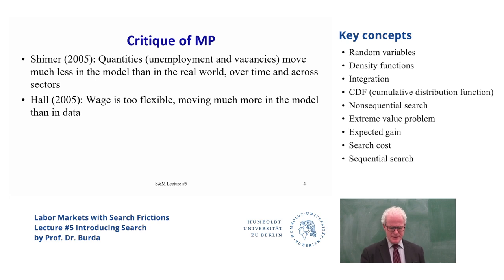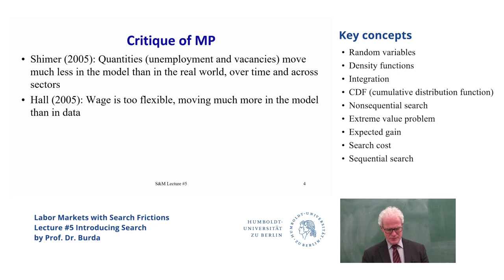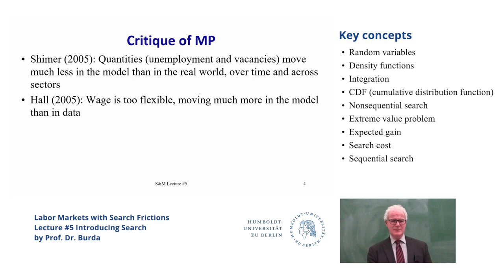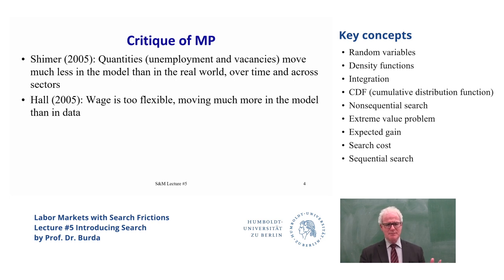Hall also showed that this is due to the assumption of Nash bargaining at the match level, meaning that the wage would move much more than it actually does in the data. This would almost mechanically lead to lower volatility of vacancy posting and, therefore, less volatility of unemployment. One easy way to fix this would be to somehow introduce a type of wage rigidity — some sort of backward dependence of the real wage or some sort of ad-hoc inflexibility.